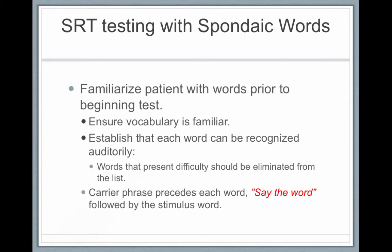You familiarize the patient with the word list at the beginning of the test, making sure the vocabulary is familiar — remember, we are not testing vocabulary. Once you're sure the patient understands all the words, you start the test with the prompt 'say the word.' For example: 'Say the word baseball' — the patient says baseball. 'Say the word railroad' — the patient says railroad.